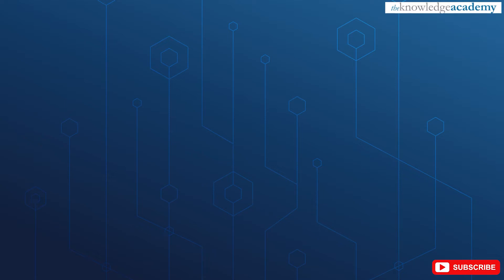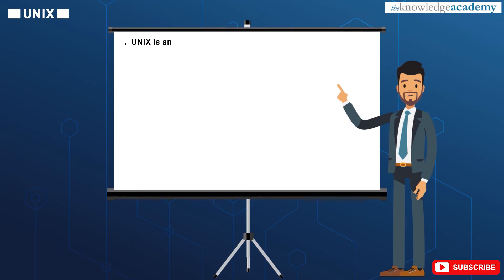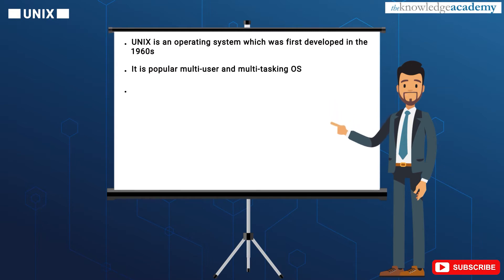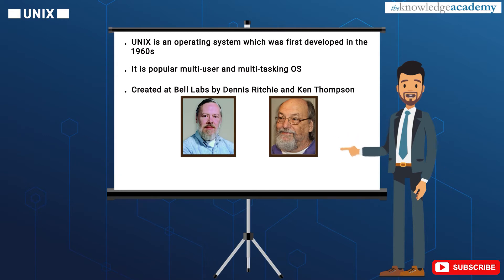Let's begin this module with having a basic understanding on what is Unix. Unix is an operating system which was first developed in the 1960s. It is a popular multi-user and multitasking operating system. Unix was created at Bell Labs by Dennis Ritchie and Ken Thompson. The attributes of Unix are Stability, Portability, and Security.